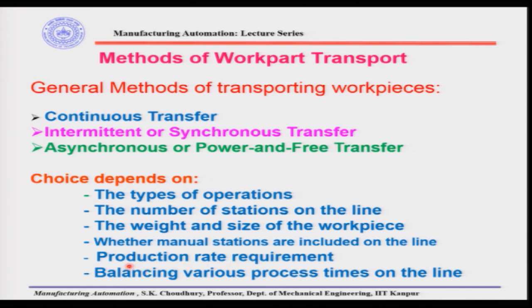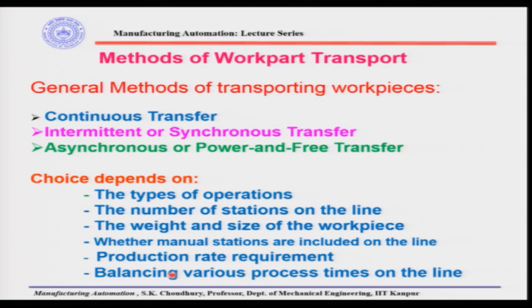Production rate requirement has to be considered — whether you need high or low production rate. In continuous transfer, the production rate will be higher because parts are not stopping or dwelling, unlike intermittent or synchronous transfer. Balancing various process times on the line is also important — if two adjacent machines have different processing times, one machine will be starving and stopping. All these points must be considered while selecting the method of work part transport.